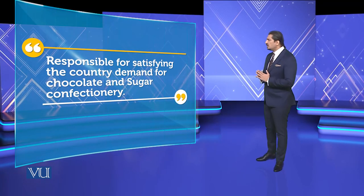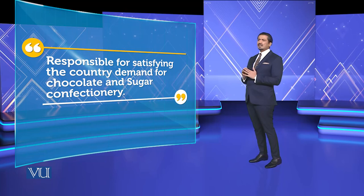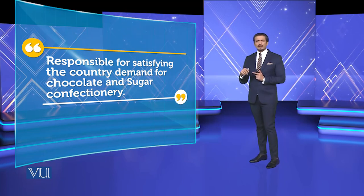We have seen that 16 to 18 types of variants exist, and the company satisfies the country's demand for chocolate and sugar confectionery. When demand increased, they couldn't just meet total demand — because being the pioneer, they were not just completing demand but actually creating demand.